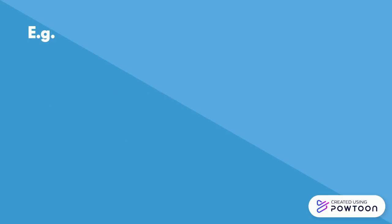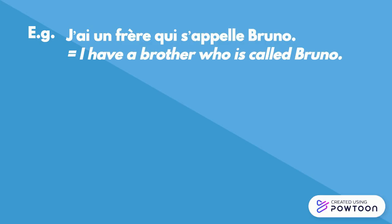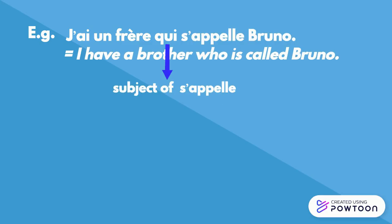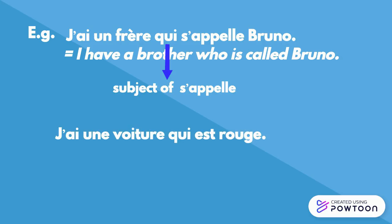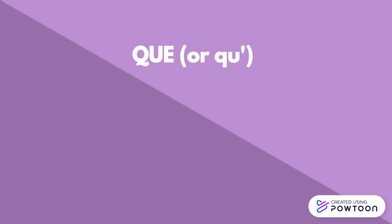For instance: j'ai un frère qui s'appelle Bruno — I have a brother who is called Bruno. Qui is the subject of the verb s'appelle. Another example: j'ai une voiture qui est rouge — I have a car that is red. Qui is the subject of the verb est.